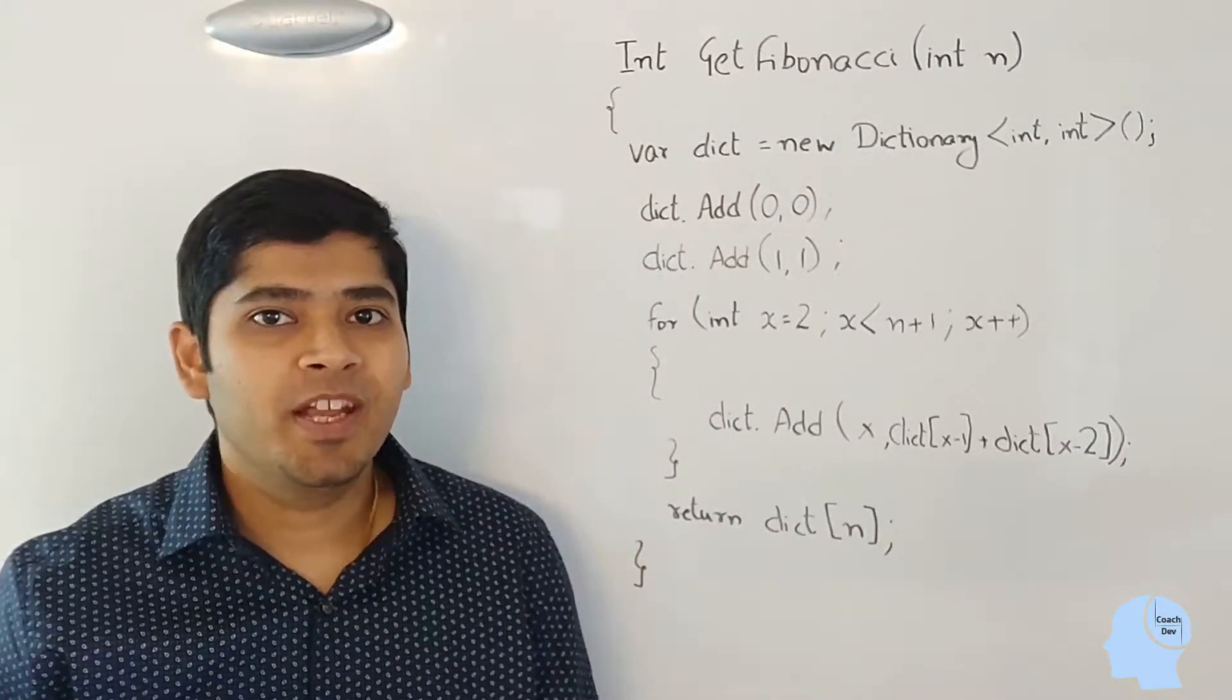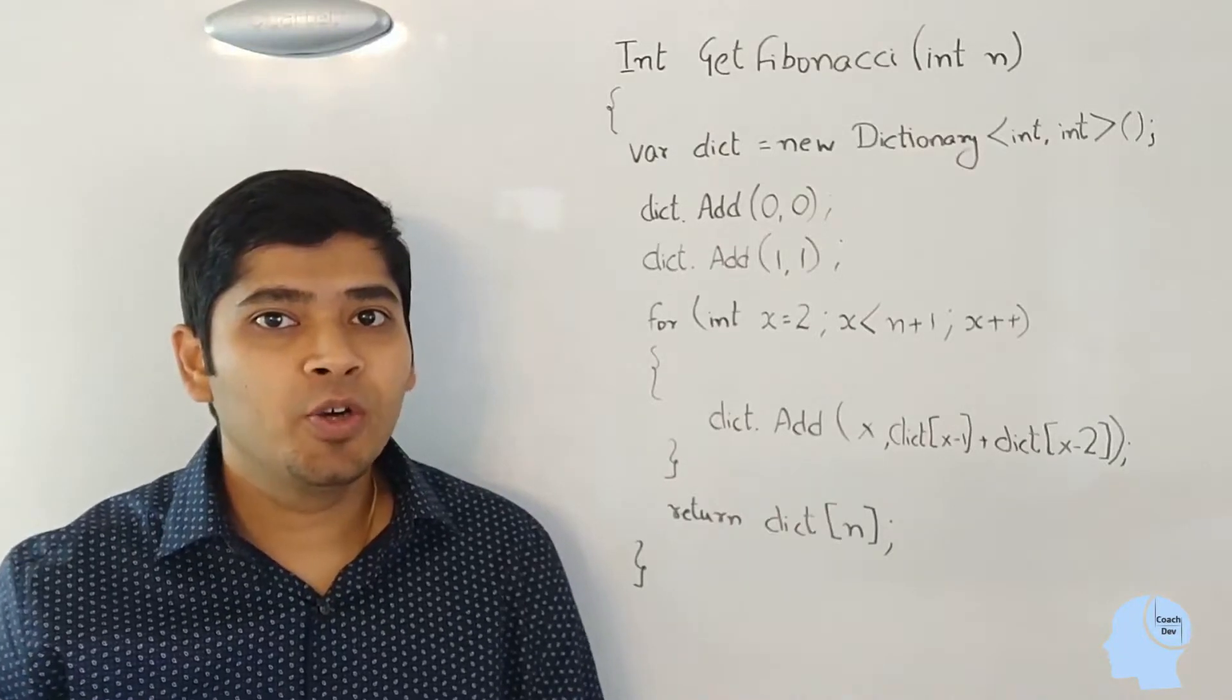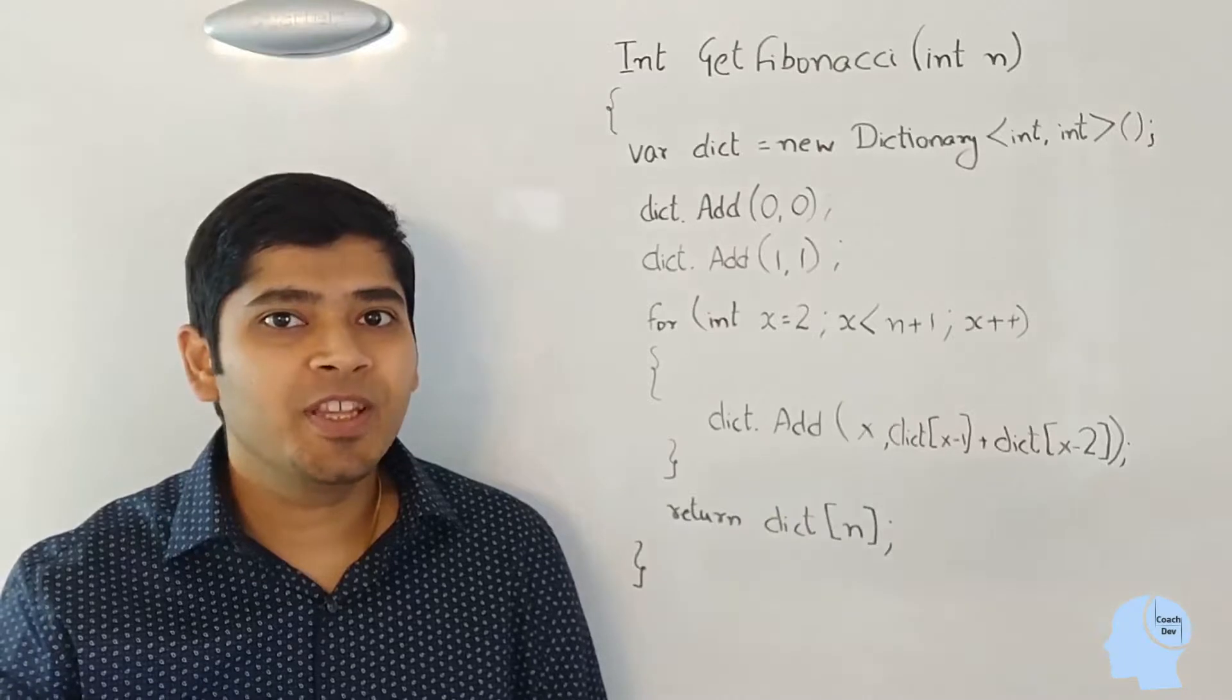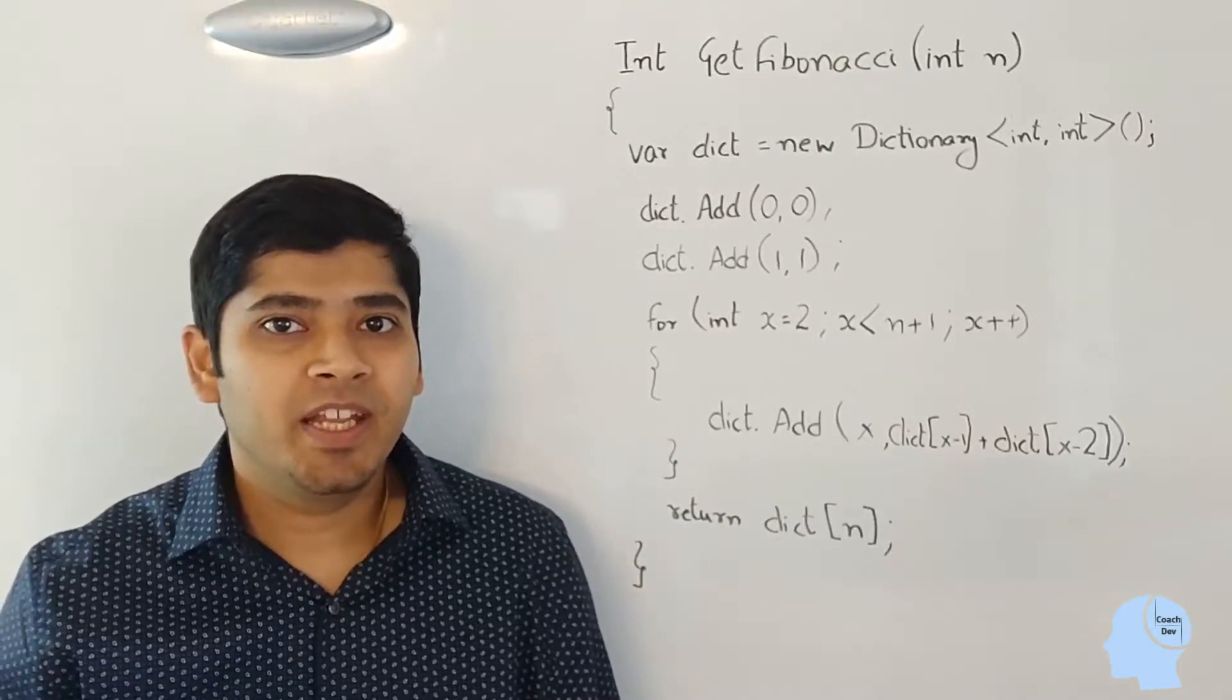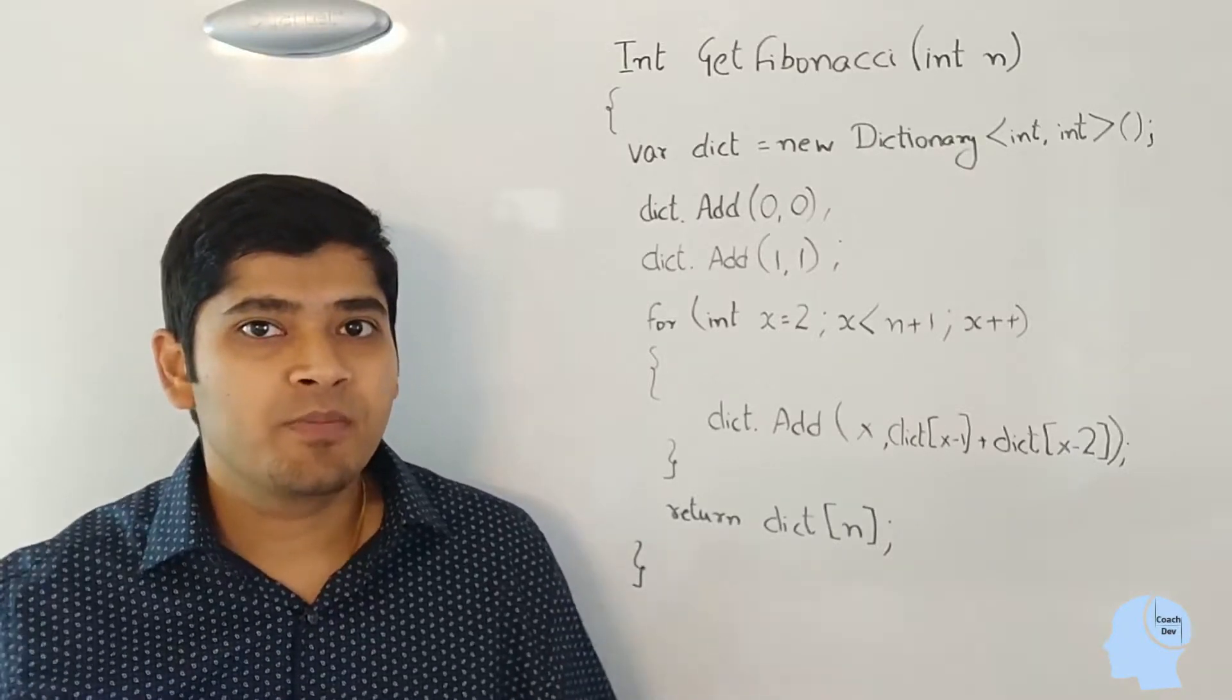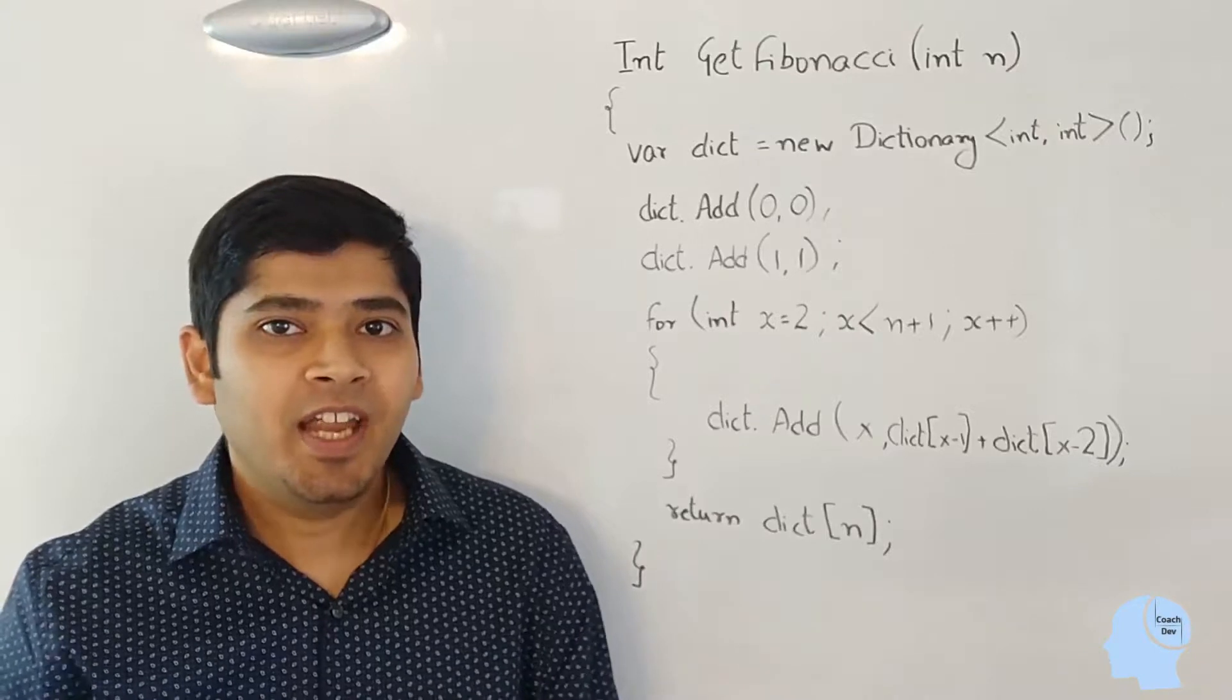Next, I run a for loop from index 2 to n plus 1. And in this for loop, what I'm doing is, for each and every index, I'm computing the value and updating it in the dictionary. At the end, my dictionary will be filled from 0 to n. So I can return the value at the index n.